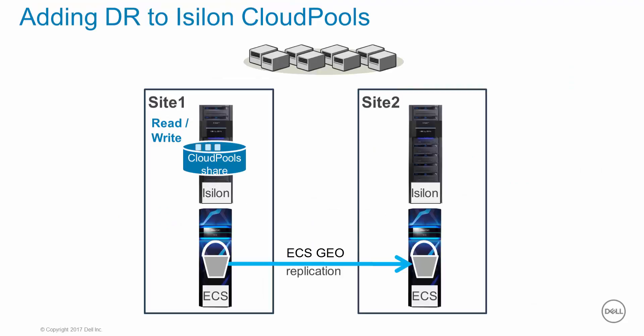ECS automatically includes support for geo-replication, which provides access to data from multiple sites as well as data redundancy in case of site failure. Once configured, any data sent to the ECS system from Cloud Pools will automatically be asynchronously replicated to the other ECS sites.